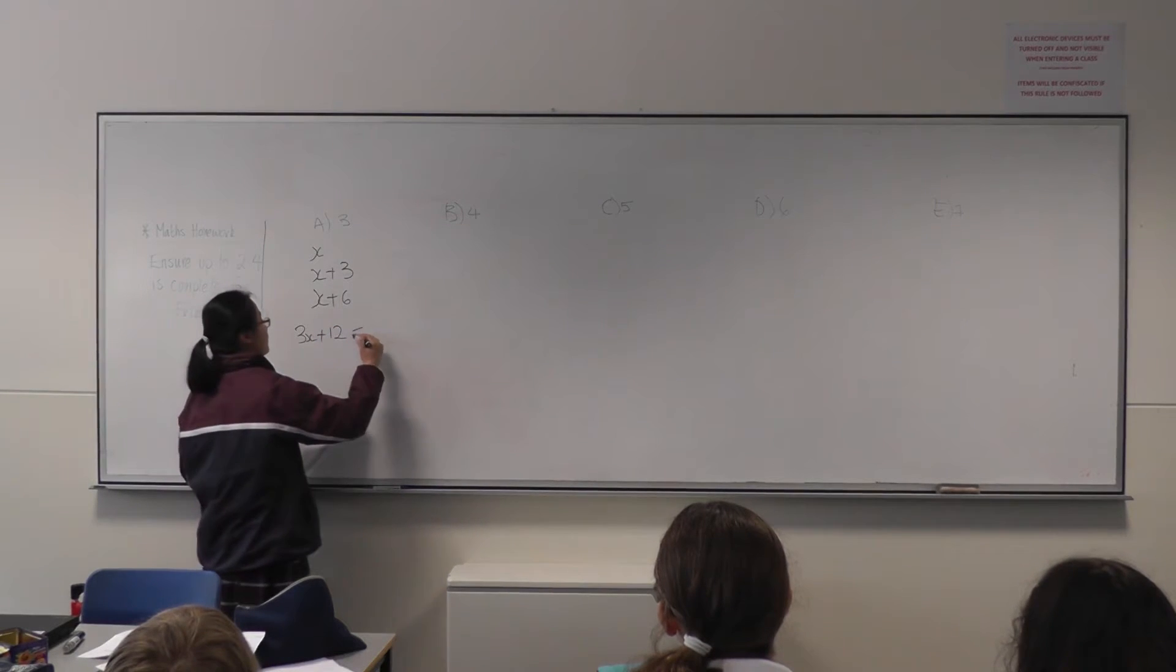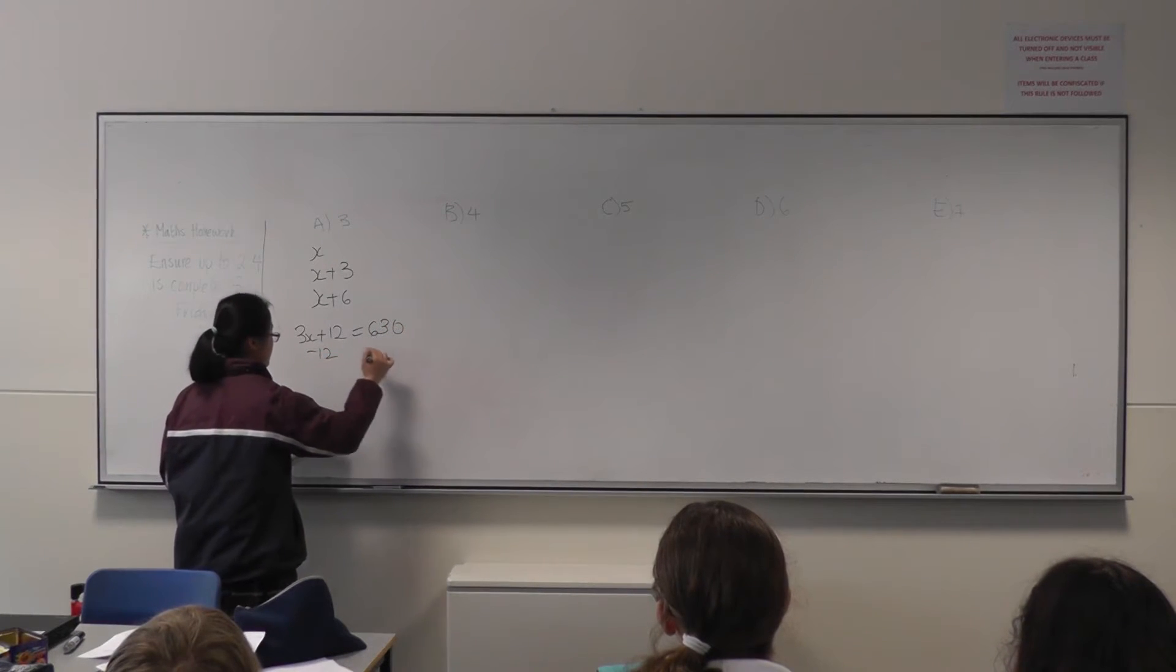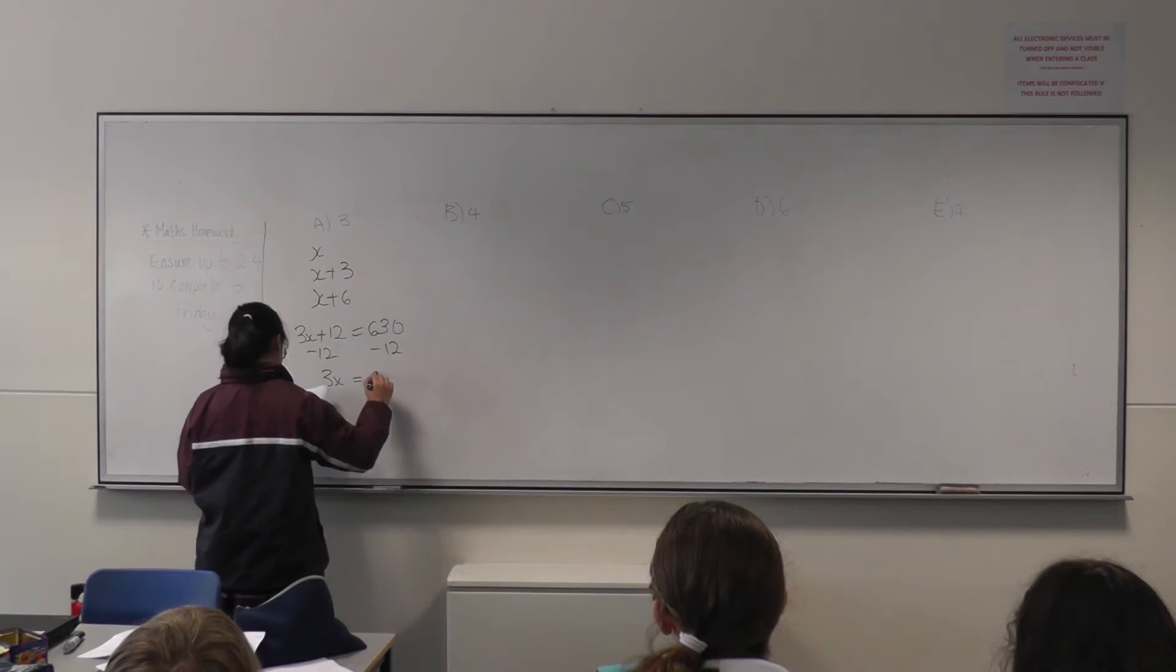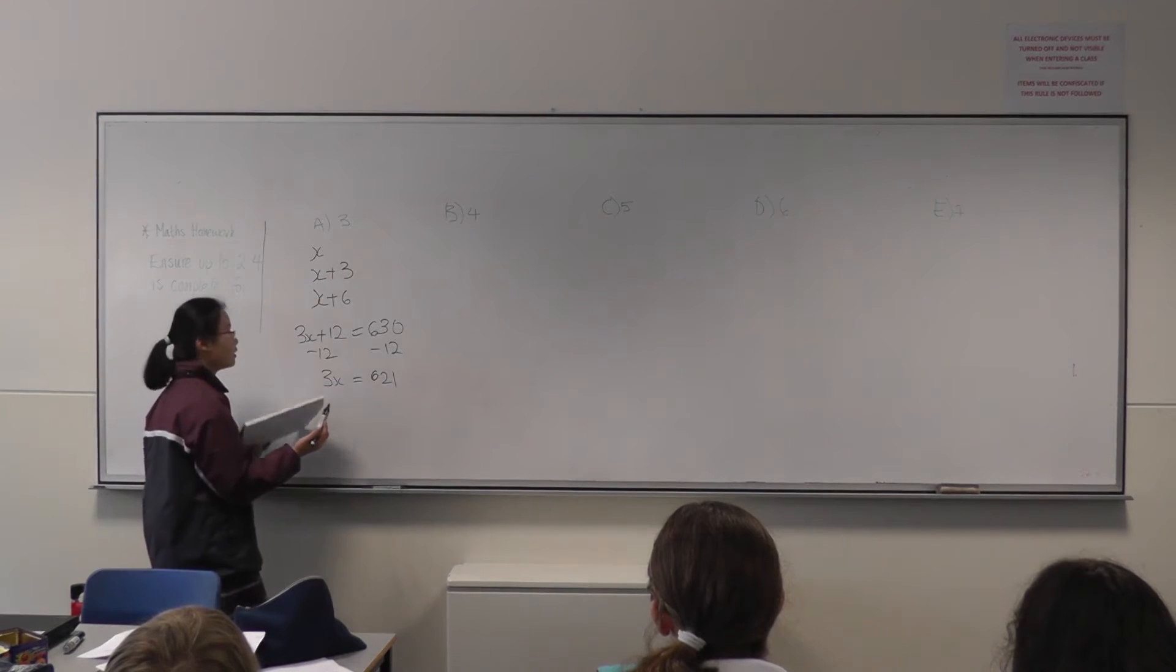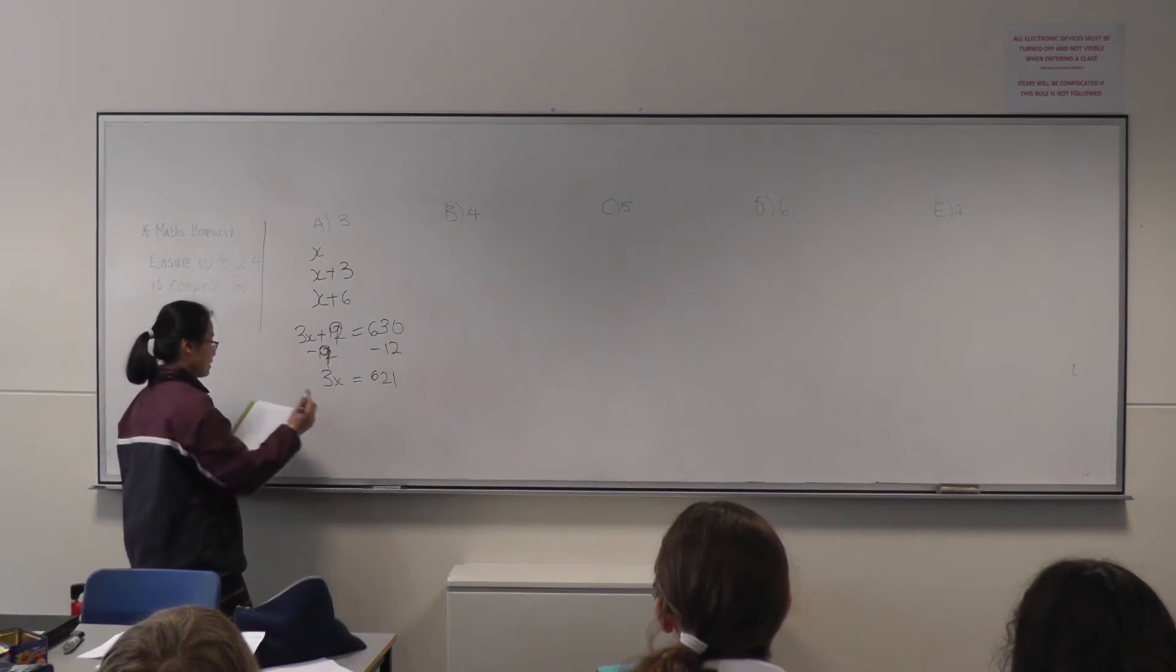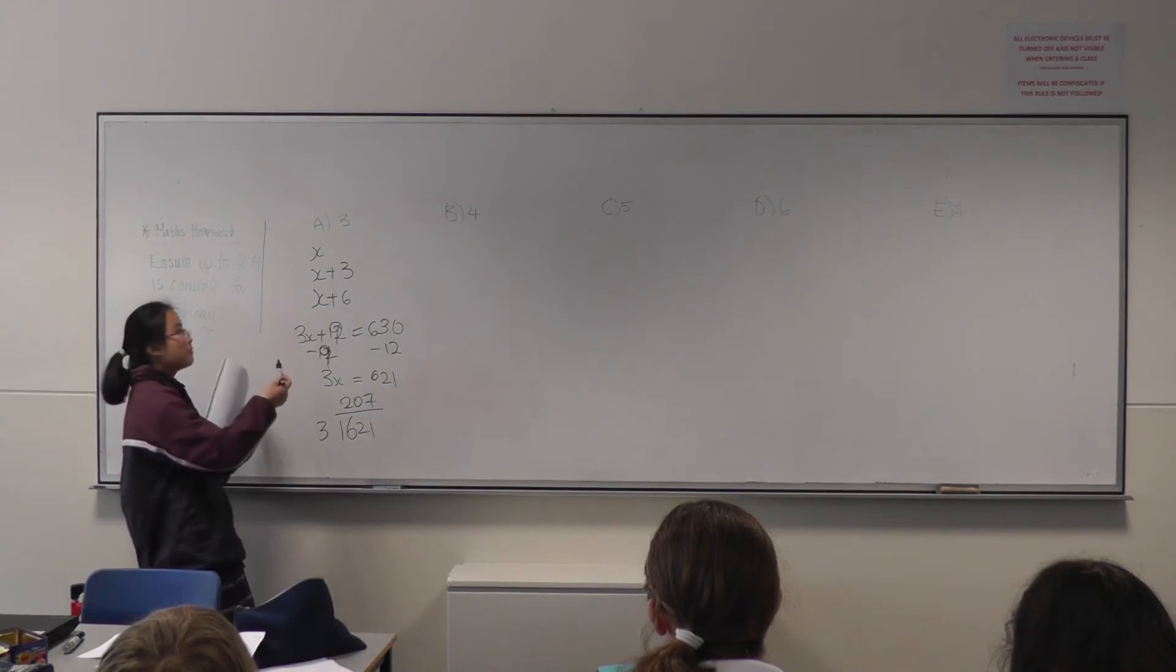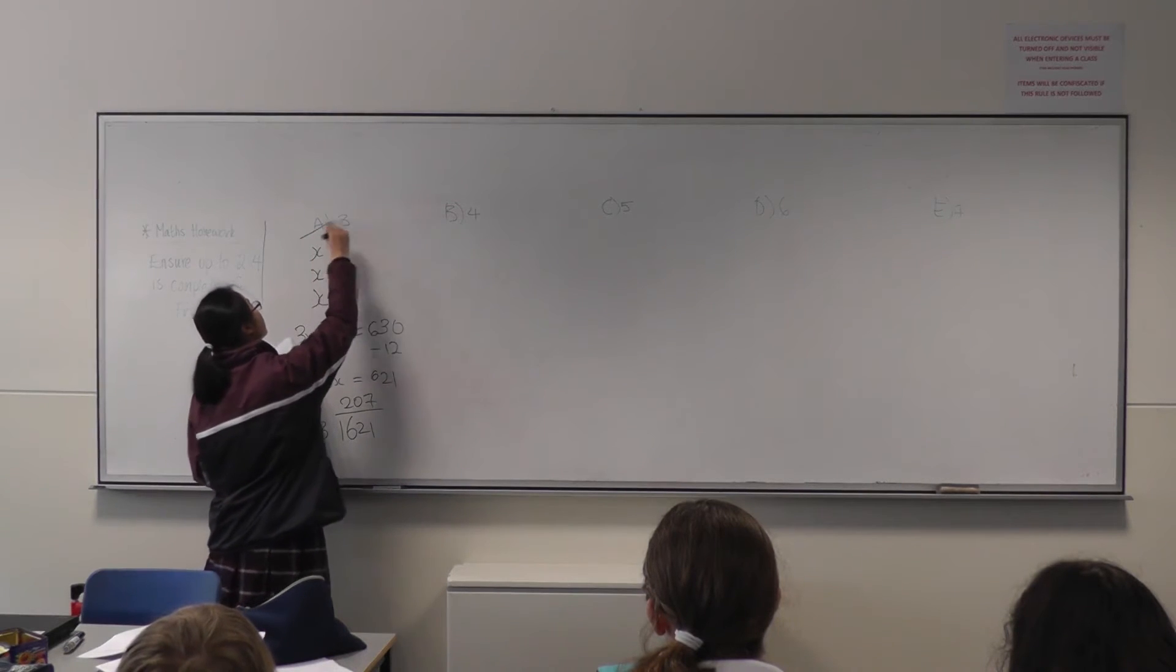And then we see if this is equal to 630. So you take 12 from each side. And then 3x equals 621. So I'm going to take away 9. And then, is this divisible? And you just divide it. And it is divisible. So that means that this answer could not be the answer because it is divisible. So I'll pass that out.